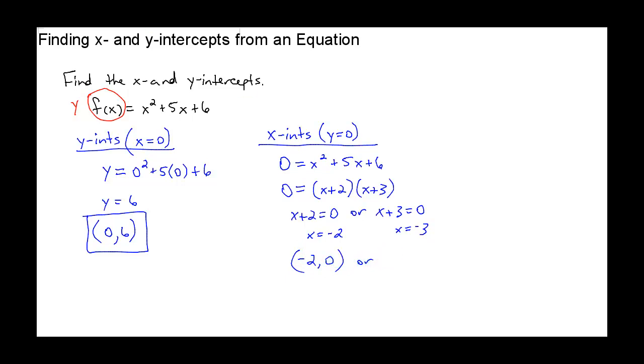Or, well sorry, not or, you've got two x-intercepts in this case. So negative two, zero is one of them, and negative three, zero is the other, because if x is negative two, y is zero, and if x is negative three, y is zero. So we have two x-intercepts.